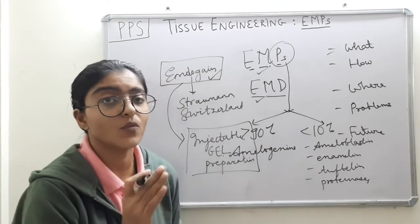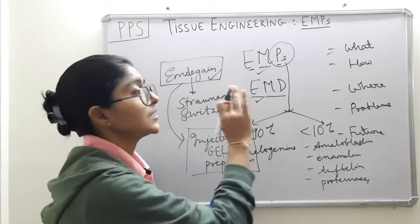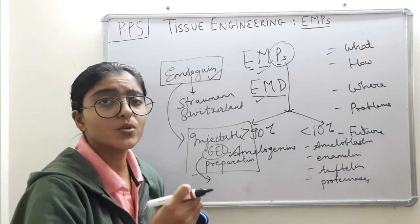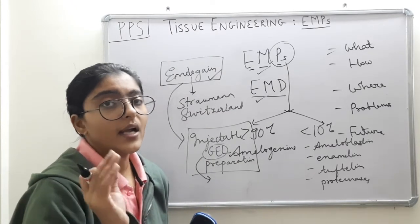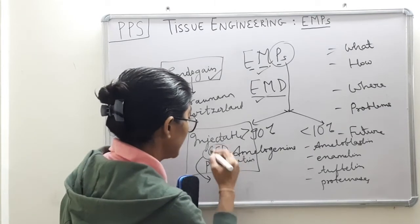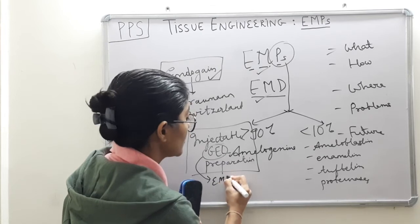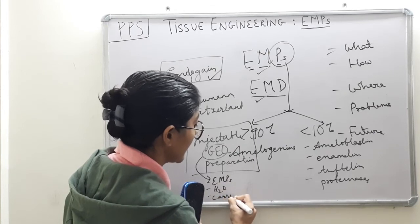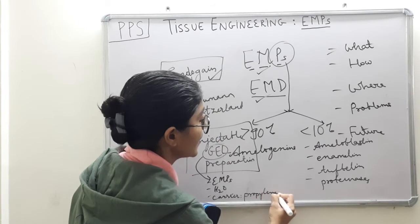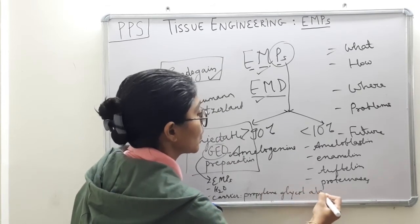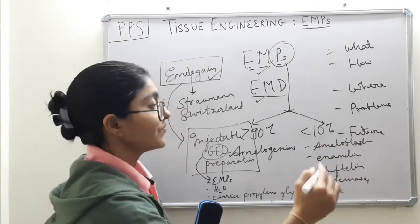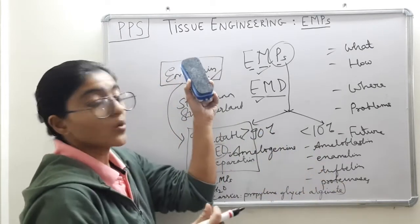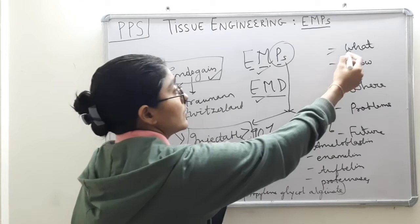Because it is a gel preparation, it cannot be 100% EMPs. A gel requires a vehicle and water as minimum components. So the composition of EMD includes the main component — EMPs — then water, and a vehicle or carrier, which here is propylene glycol alginate.